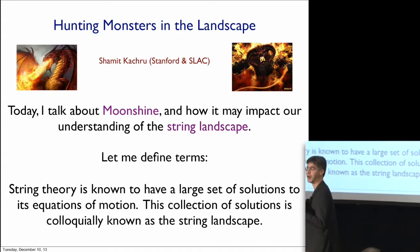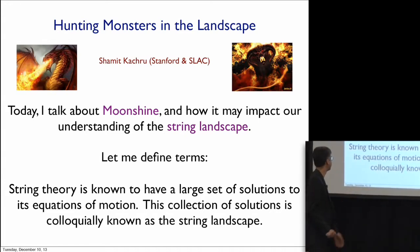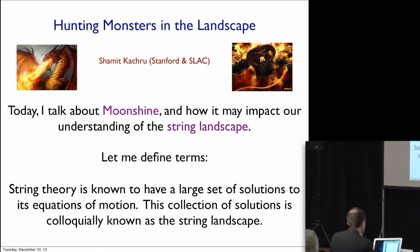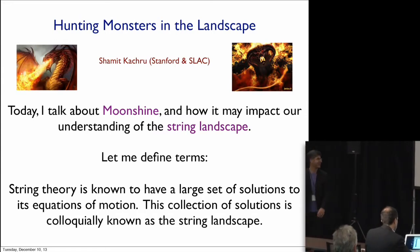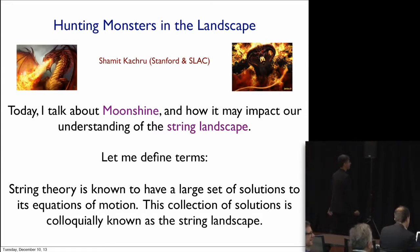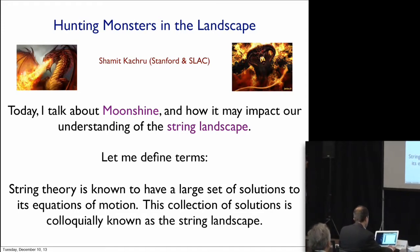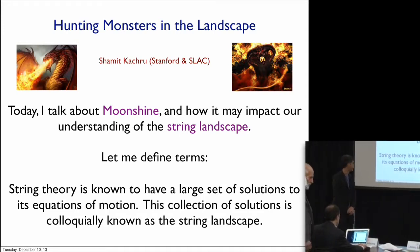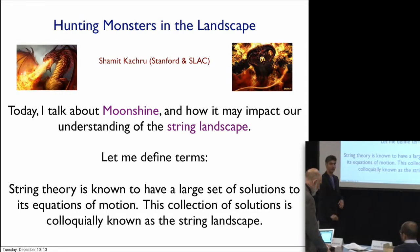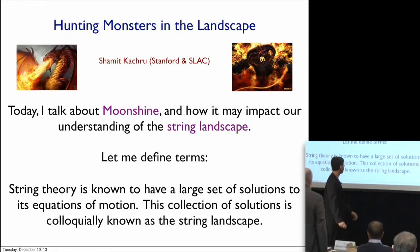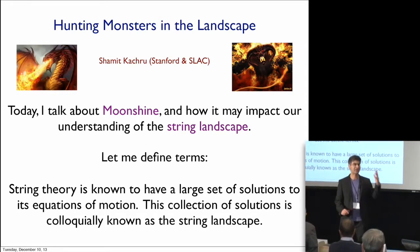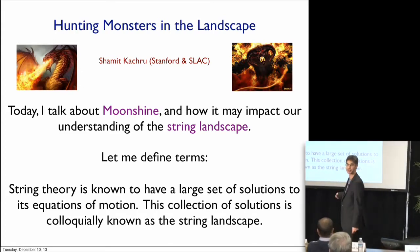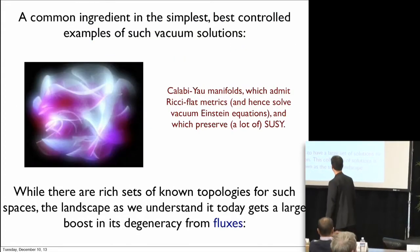Many of you here are not string theorists, so I will define my terms, and that will actually take me through 90% of the talk. String theory is known to have a very large set of solutions to its equations of motion in some approximation. This collection of solutions — we could debate the precise nature of it — we'll call the string landscape, which is the name it's come to be called by.